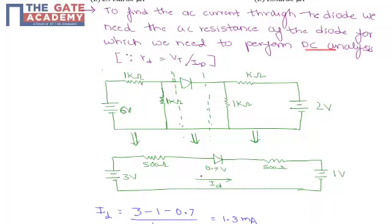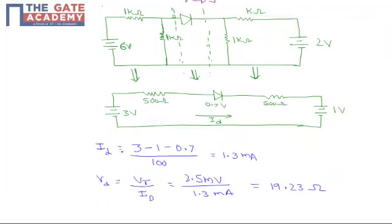Therefore Id will be input voltage minus output voltage minus Vbe divided by the resistance value, that is R1 and R2.